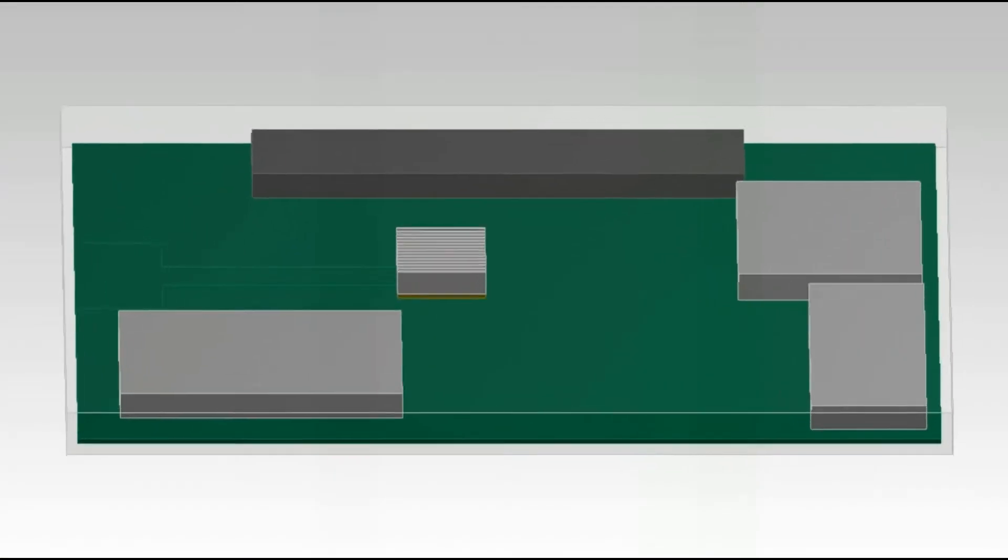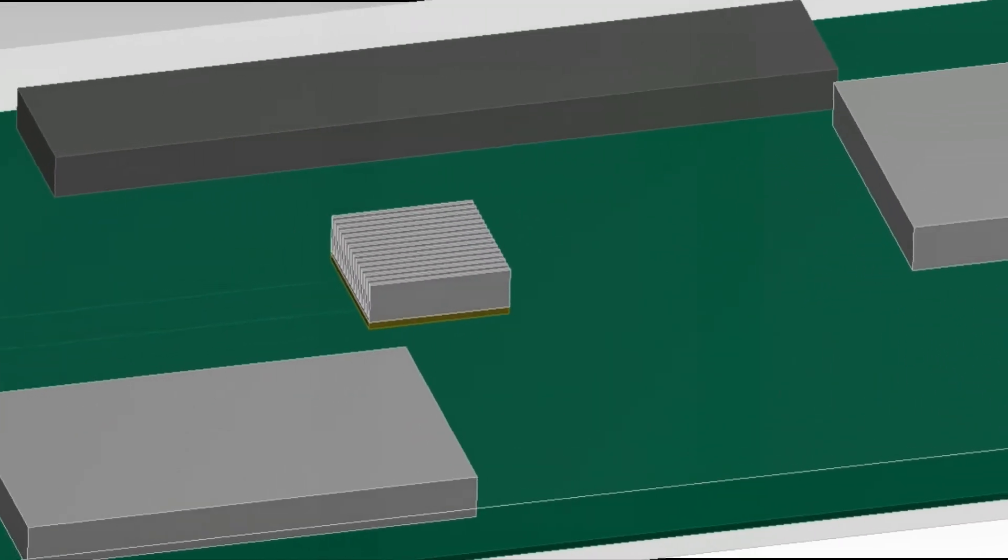We will not model the actual fan in this model, but we'll imprint faces that are in the paths of the forced convection that forces air from the heat sink to the exhaust grills.